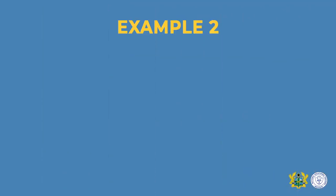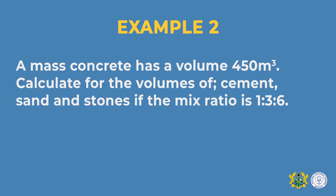Now let us look at another example — example number two. A mass concrete has a volume of 450 cubic meters. Calculate for the volume of cement, sand, and stone if the mix ratio is 1:3:6. Here, we are also given the total volume of concrete, so we don't need to calculate it. When you look at the first and second examples, they are very similar — just the total volume of concrete is different.